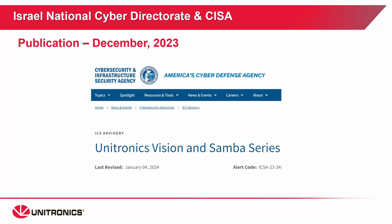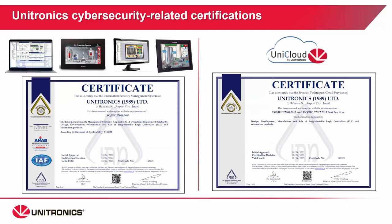Some Unitronics action items. Unitronics is working closely with several agencies, including the Israel National Cyber Directorate and CISA, the Cybersecurity and Infrastructure Security Agency. Unitronics is following their guidelines and testing products in authorized labs continuously. In the last two years, Unitronics has received several certifications relating to cybersecurity. Unitronics is certified as a company for ISO 27001 for distribution and production of industrial automation devices, including PLCs and UniLogic. Unitronics is also certified for ISO 27017 as a cloud provider for the UniCloud platform.